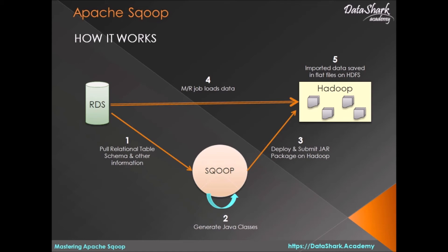In the second step, Sqoop will generate Java classes using the table schema and package them into a jar file.